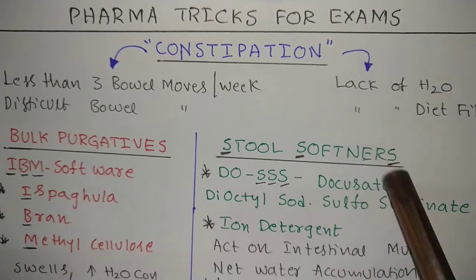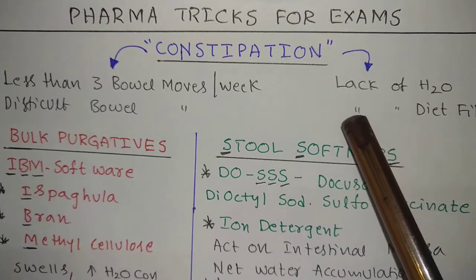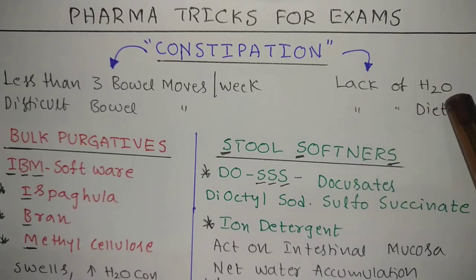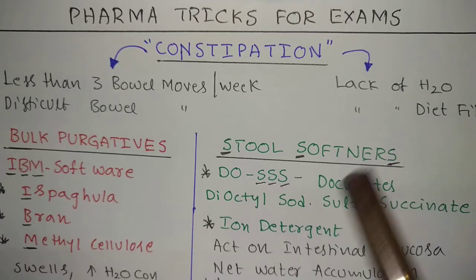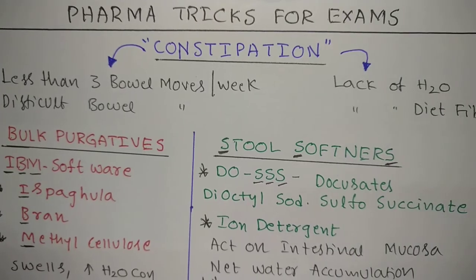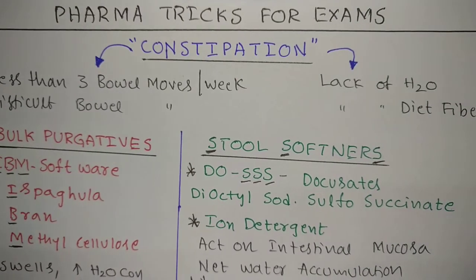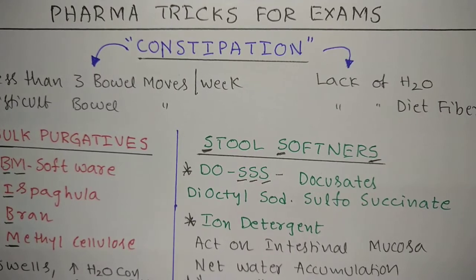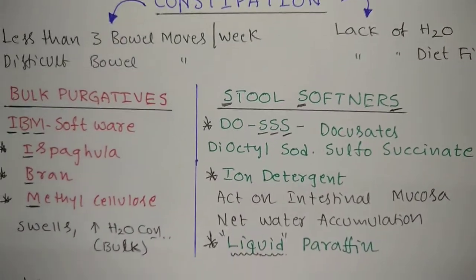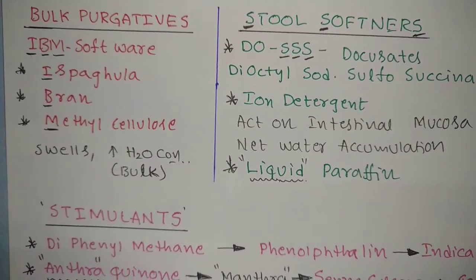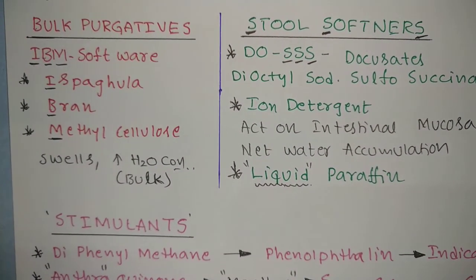The two main reasons for constipation are: lack of water, that is body dehydration, and lack of fiber in the diet. These are the two main causes. There are only four classes of drugs for constipation that we will see quickly one by one.